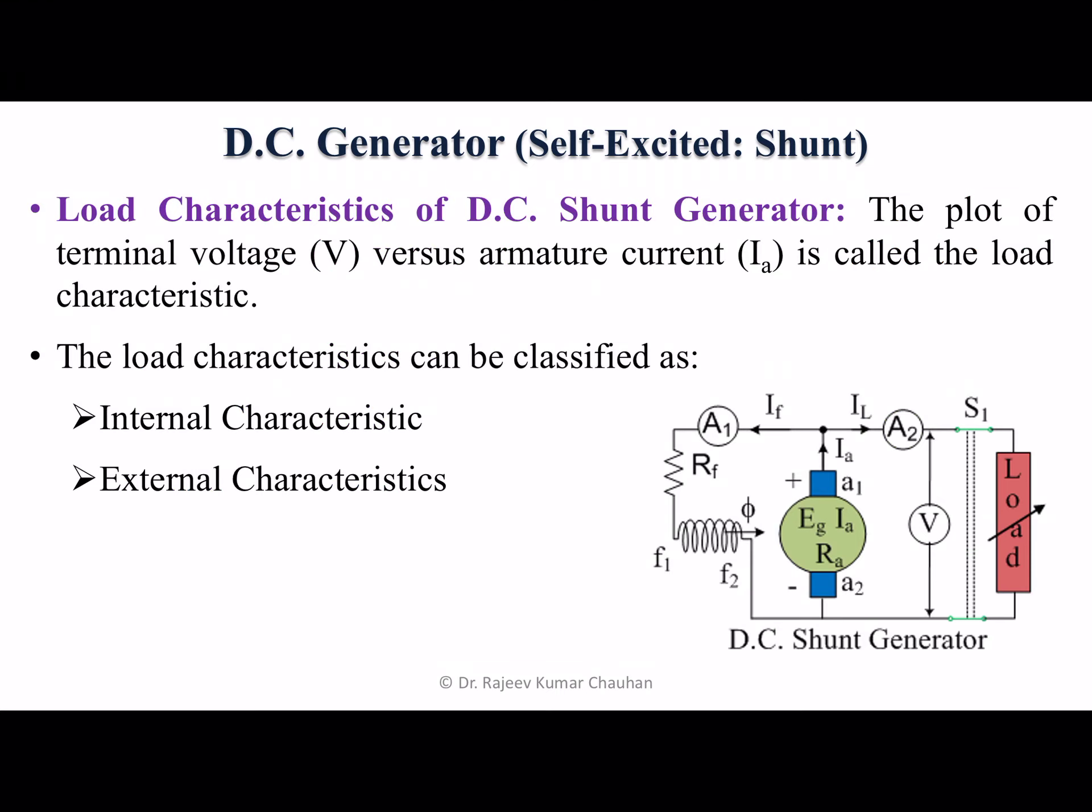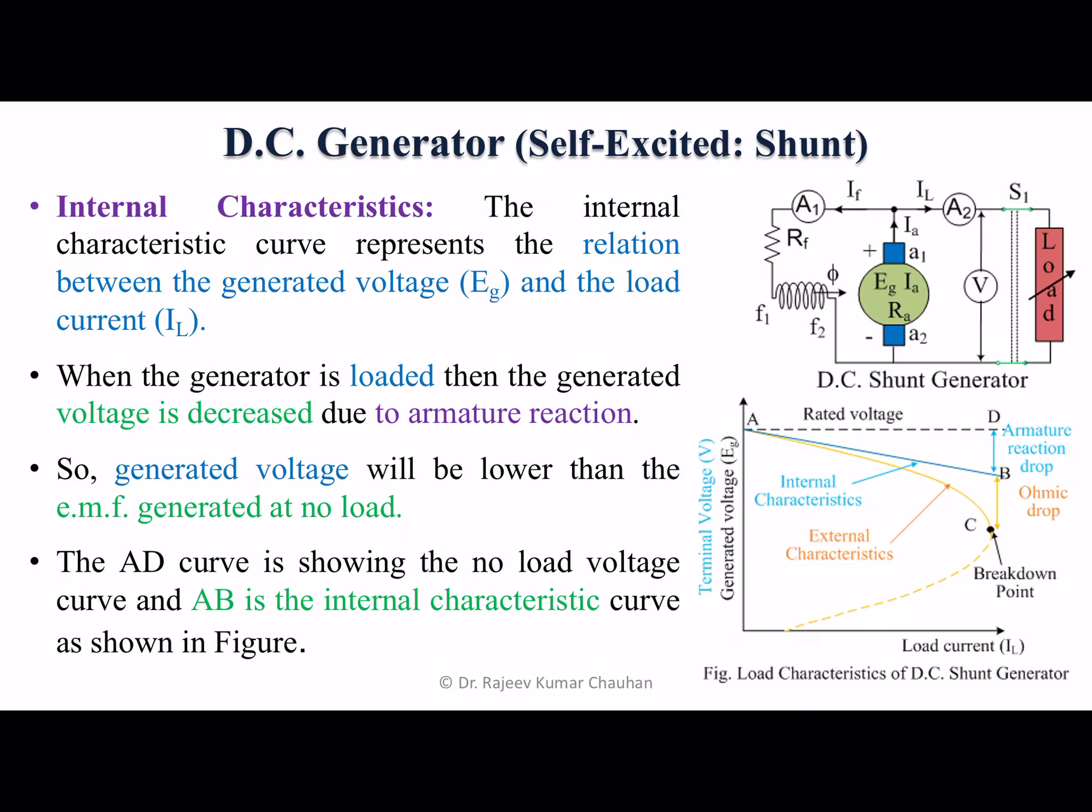The load characteristics of DC shunt generator: the plot of terminal voltage versus armature current IA is called the load characteristics. The load characteristics can be classified as internal characteristics and external characteristics.